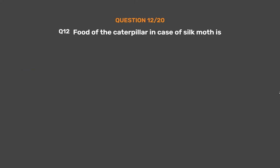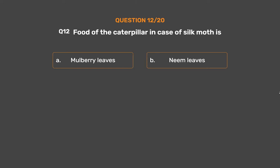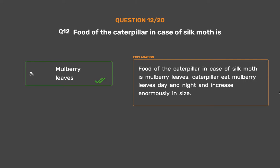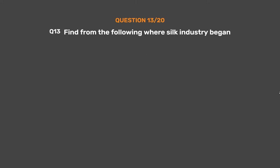Question No. 12. Food of the caterpillar in the case of the silk moth is — Option A: Mulberry leaves, Option B: Neem leaves, Option C: Tulsi leaves, Option D: Pudina leaves. The correct answer is Option A: Mulberry leaves. Food of the caterpillar in the case of the silk moth is mulberry leaves. Caterpillars eat mulberry leaves day and night and increase enormously in size.